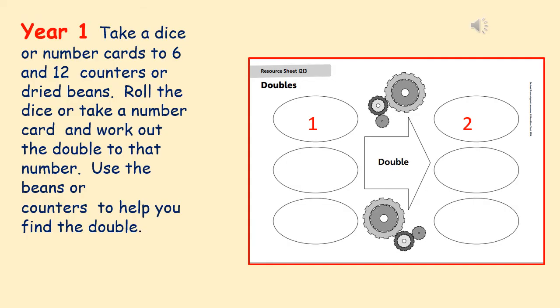This activity, you might need a dice, or you can use your number cards from one to six. And you'll also need 12 counters or some dried beans will do. So roll the dice, look at the number on your dice, and work out the double by using your beans or your counters. Write your number that you've rolled on the left, and put your answer in on the right, like I've shown you on the screen.